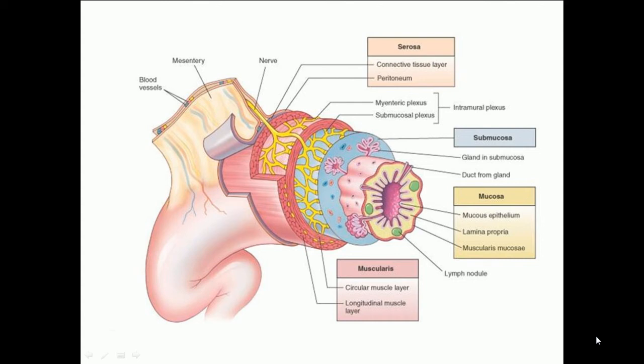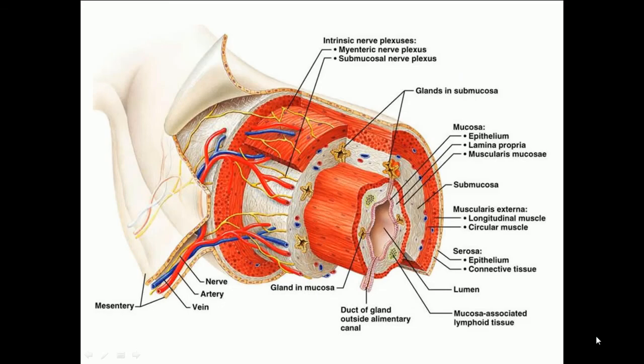The continuous presence of bacteria and other stimuli, as well as the large surface area that must be defended against potentially harmful substances, accounts for the fact that the intestine has a very well-developed local immune system that comprises both innate and adaptive immune effectors. The muscularis layer typically contains two layers of smooth muscle.